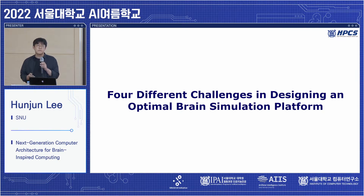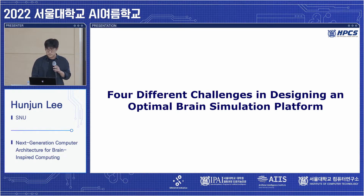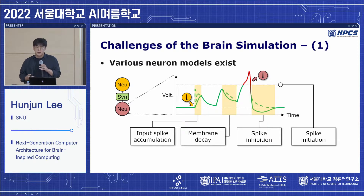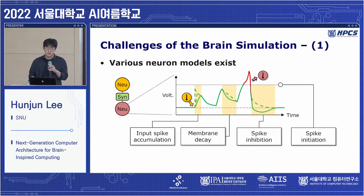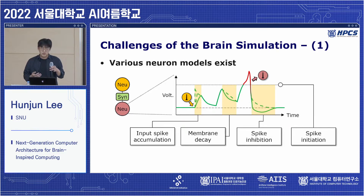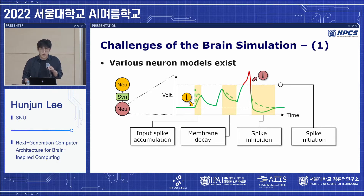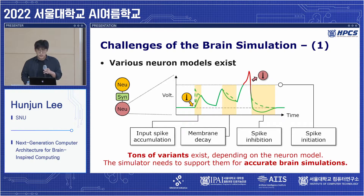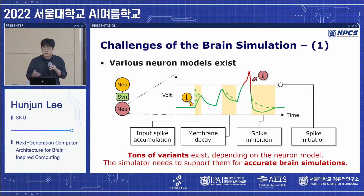Specifically, we identified four different challenges in designing an optimal brain simulation platform. The first challenge is that there are various neural models to describe neuron behavior. Some neural models change membrane voltage more drastically than others, some exhibit inhibitory behavior after firing a spike, and some are governed by exponential, alpha, or quadratic functions. Tons of variants exist depending on the neural model, and the simulator needs to support them for accurate brain simulations.